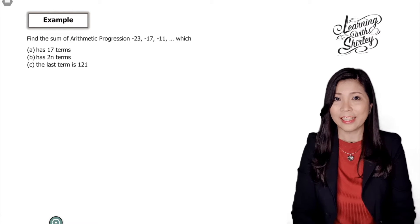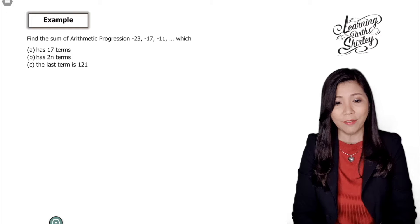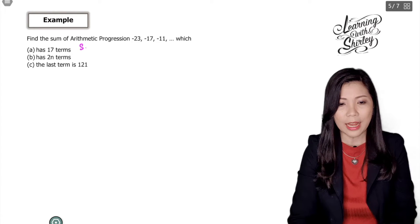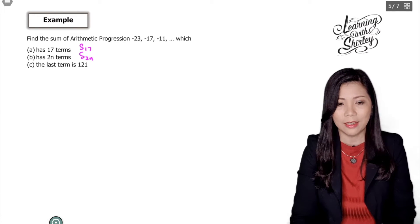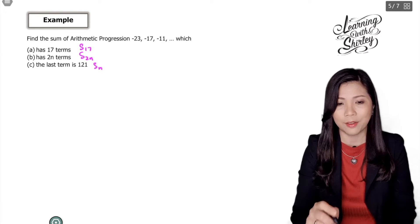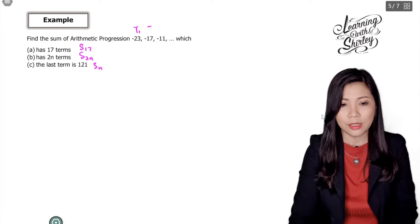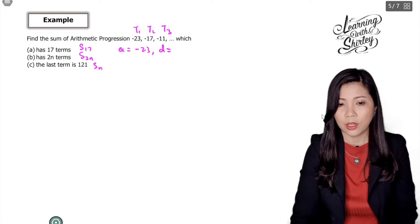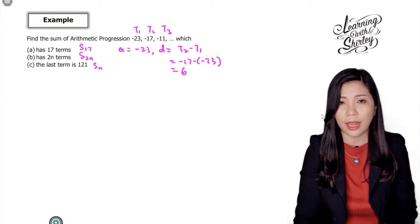Let's look at this example. Find the sum of arithmetic progression negative 23, negative 17, negative 11, which has 17 terms — meaning find S17. Also (b) has 2n terms, meaning find S2n in terms of n, and the last term is 121. First, find a and d from the progression. So a equals negative 23, and d equals t2 minus t1, which is negative 17 minus negative 23, giving 6. We'll use this a and d for all parts.